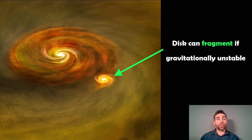In that process, it's possible that the disk can fragment. If you have a fairly massive disk that is quite thin, it can become locally gravitationally unstable. Like the gas cloud we had that collapses under its own gravity, there are certain situations where this can occur in the disk itself.